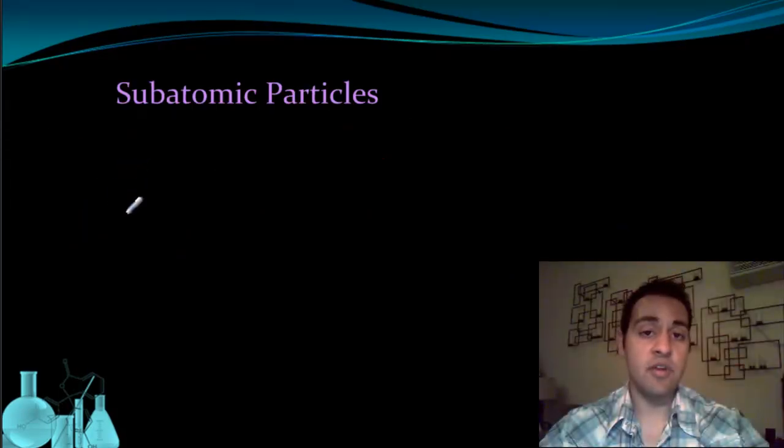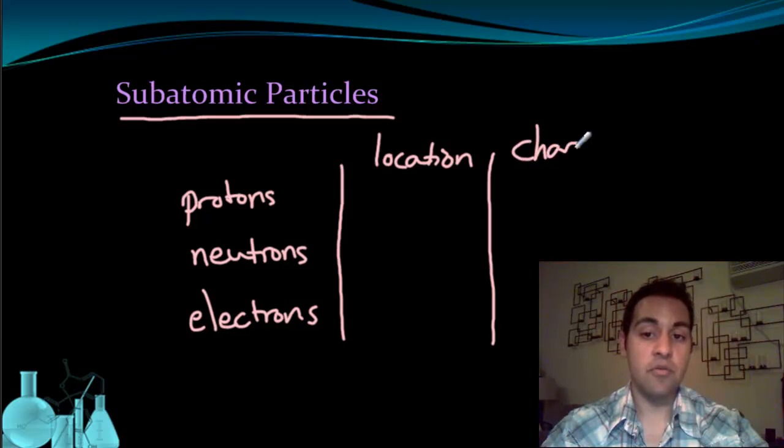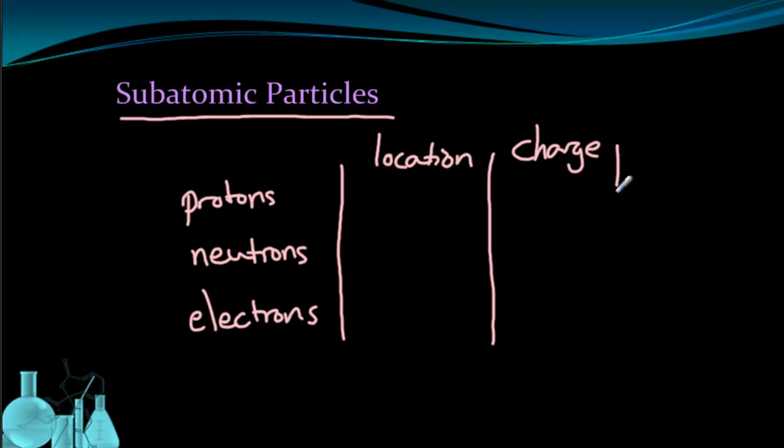We collectively refer to protons, neutrons, and electrons as subatomic particles. Now we're going to examine some of the characteristics of protons, neutrons, and electrons. The first of these characteristics is the location of the subatomic particle. The next thing we're going to look at is the charge of the particle.